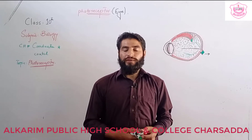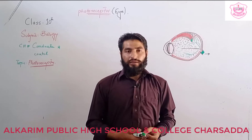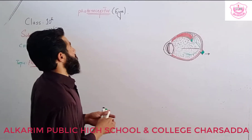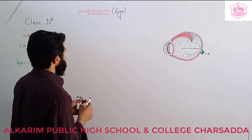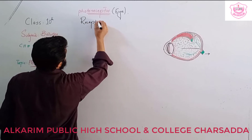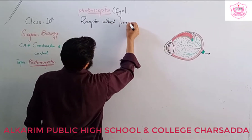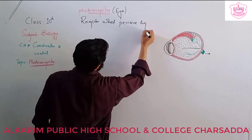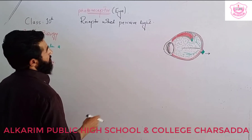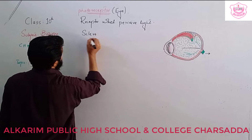In the previous class we discussed photoreceptors and its two parts, sclera and choroid. Today we are coming toward discussing the third and innermost layer, which is the retina. As a recap, a photoreceptor is a receptor which perceives light, and we have already discussed the three layers of the eye: sclera, choroid, and retina.